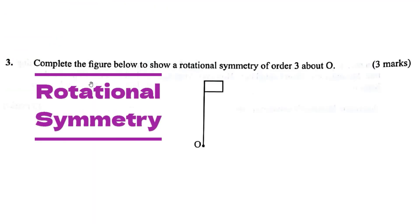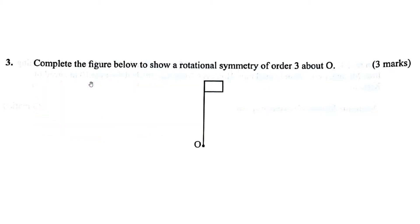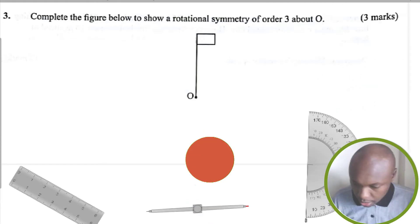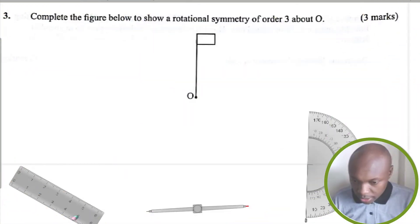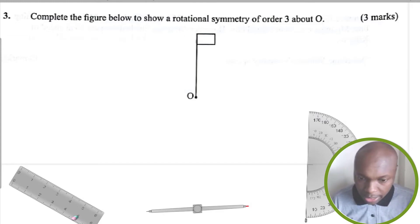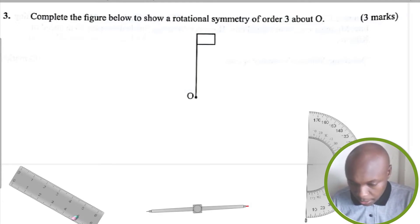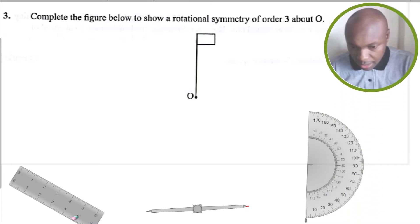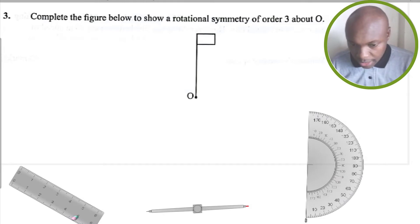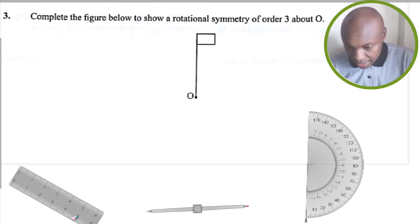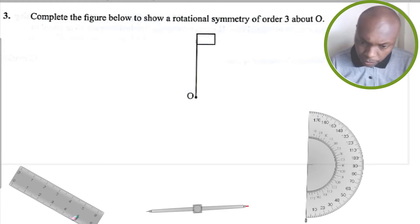Complete the figure below to show a rotational symmetry of order 3 about O — 3 marks. Before we solve this question, we need to understand what rotational symmetry is, and we need to understand the order of rotational symmetry. The order of rotational symmetry is the number of times an object will fit onto itself when rotated about a certain point. In this case, we have this figure and the point we're supposed to rotate about is O. Since it has a rotational symmetry of order 3, it should fit onto itself three times when rotated about point O.